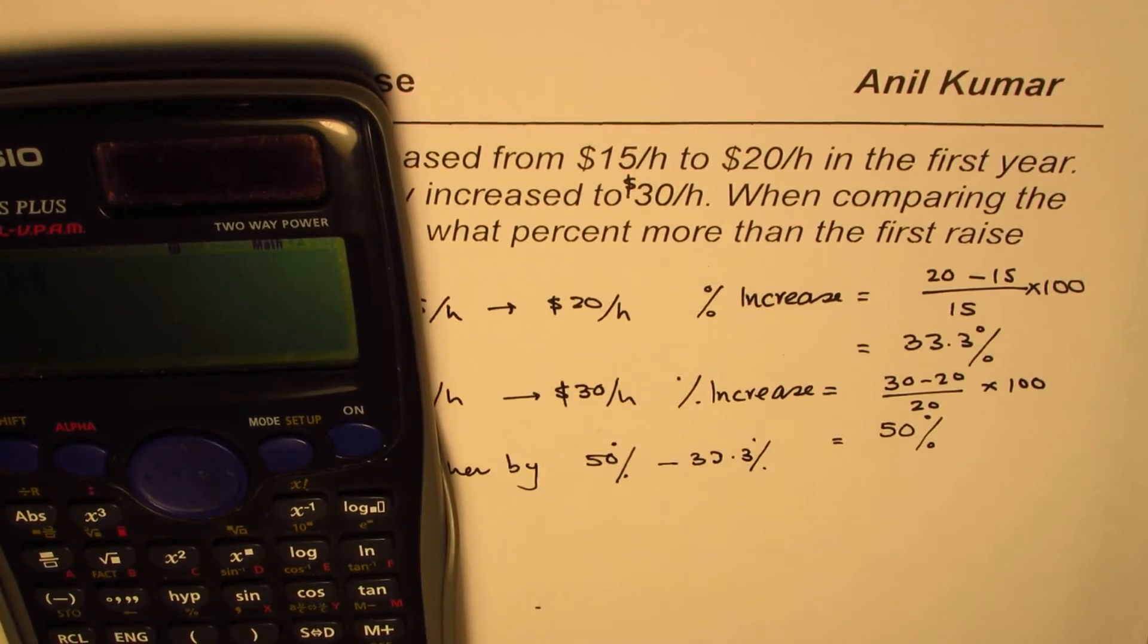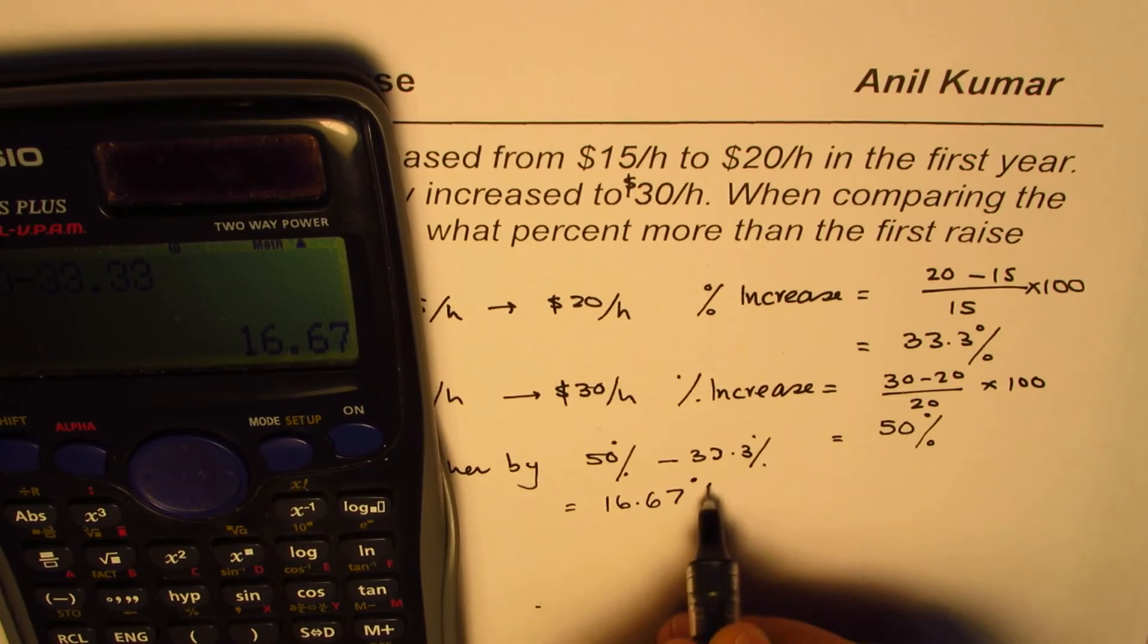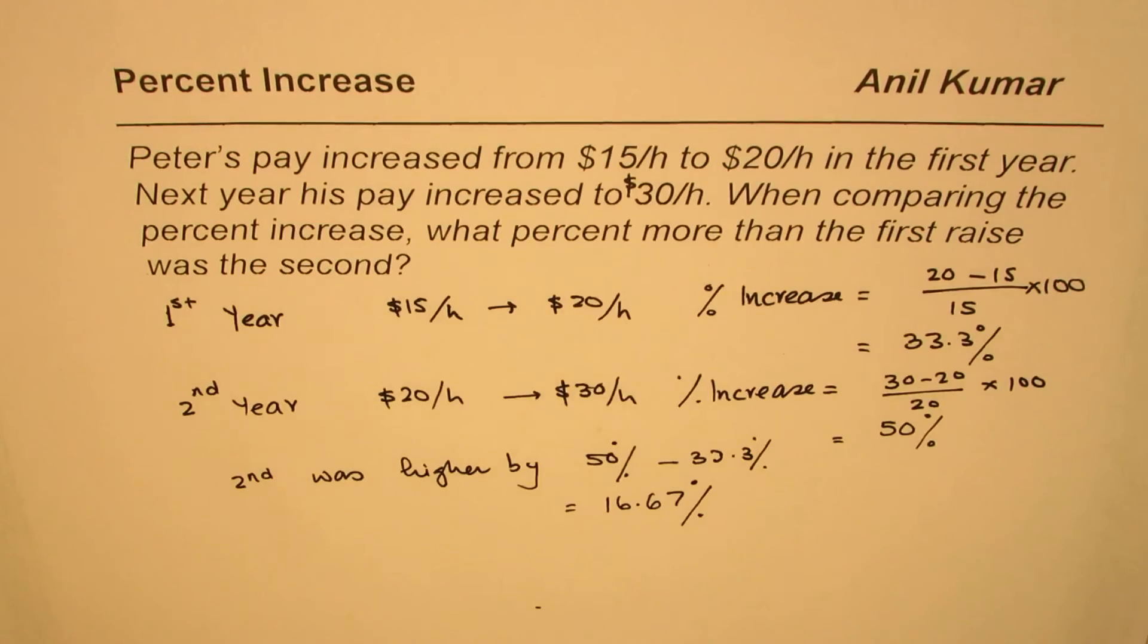So 50 minus 33.33 gives you in decimals... we can write this as 16.67 percent. So that is how we can find the percent increase.